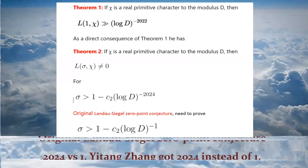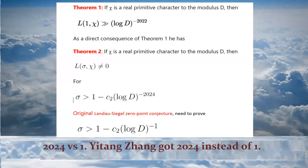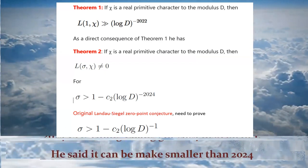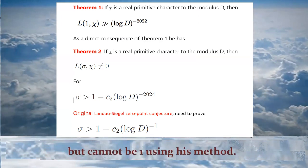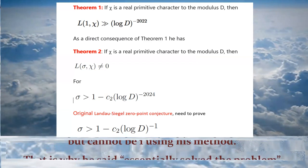Yi Tang Zhang got 2024 instead of 1. He said it can be made smaller than 2024, but cannot be 1 using his method. That is why he said essentially solved the problem.